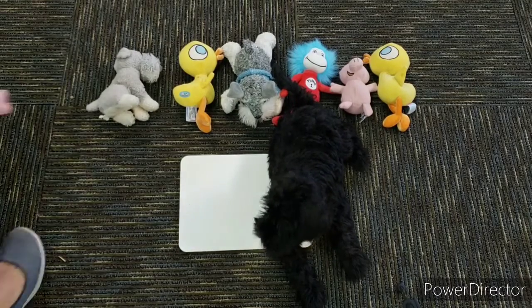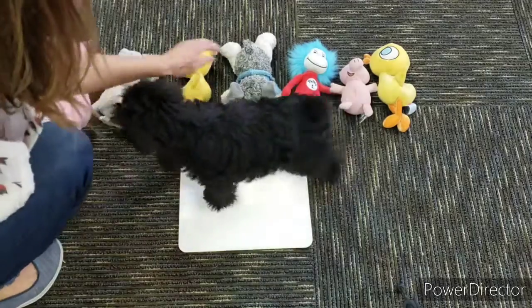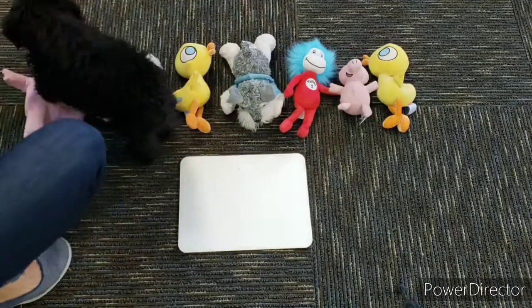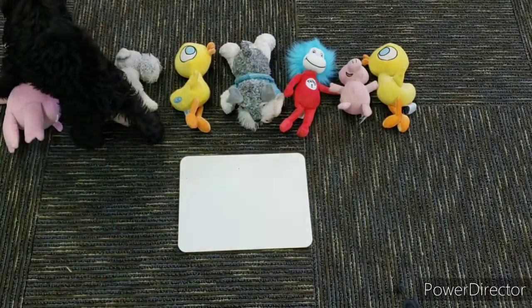Okay, so let's see. I have one, two, three, four, five, six, seven. And Zora doesn't count as a stuffy.